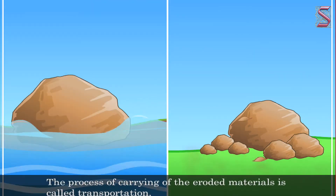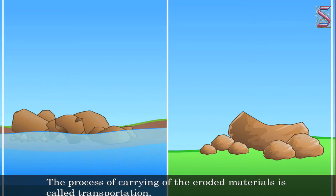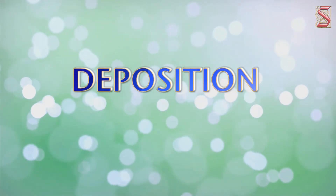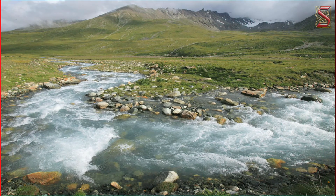The rivers and winds cut soils and rocks in place and transport them to different and distant places. The next stage is deposition. As the rivers and winds slow down, there exists no force to carry the materials further, and as a result they get dumped at certain places.